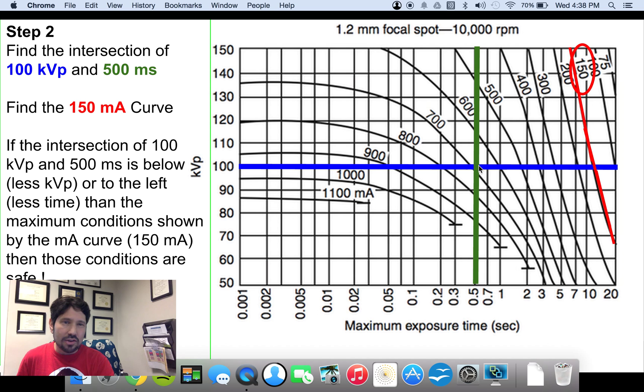So my green line shows 0.5 seconds. My blue line shows 100 kVp. And so this intersection is the conditions that we're going to compare with the 150 mA curve. So this chart is telling me that anywhere on this red curve is the maximum kVp time combination that I can do at 150 mA. So I can do 70 kVp for almost 20 seconds, maybe 15 seconds. Or I can do a higher kVp like 140 kVp, but I can only do that for like seven seconds. So if my intersection point of the conditions in the question is to the left of, so it's a lower time or below a lower kVp, then they're safe.